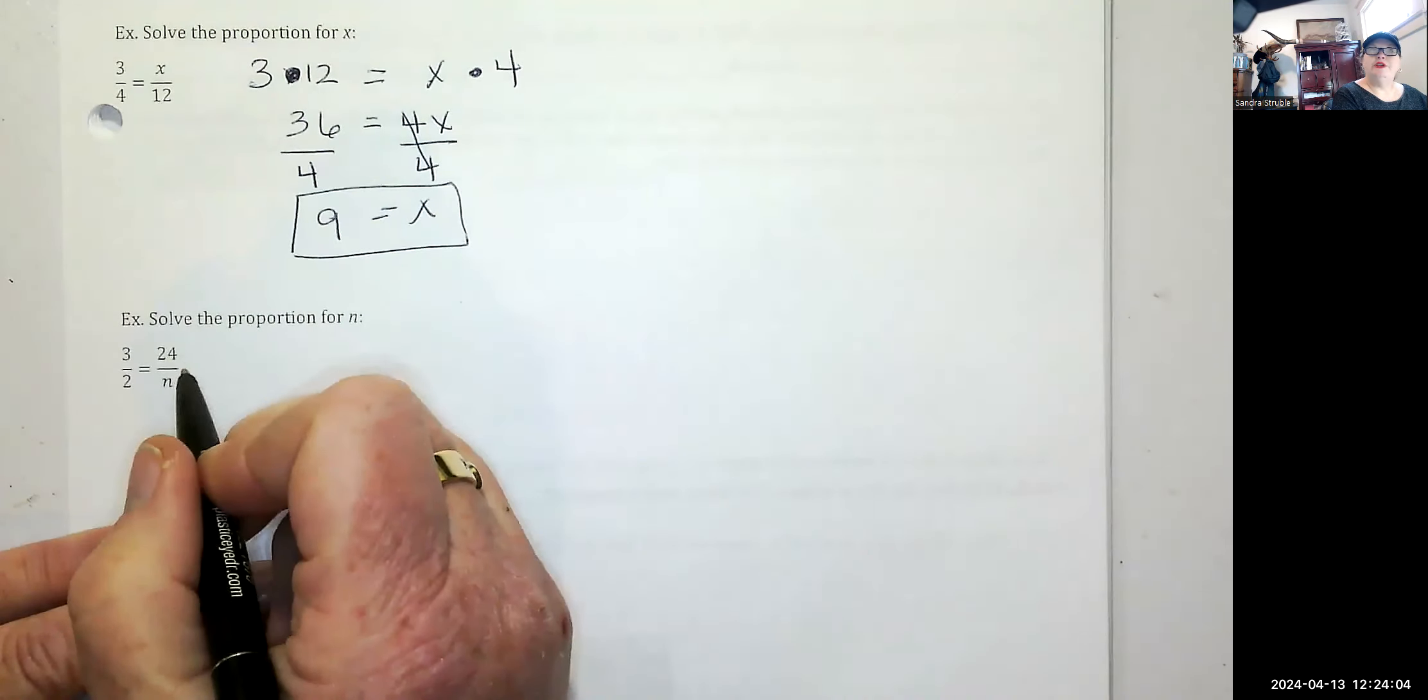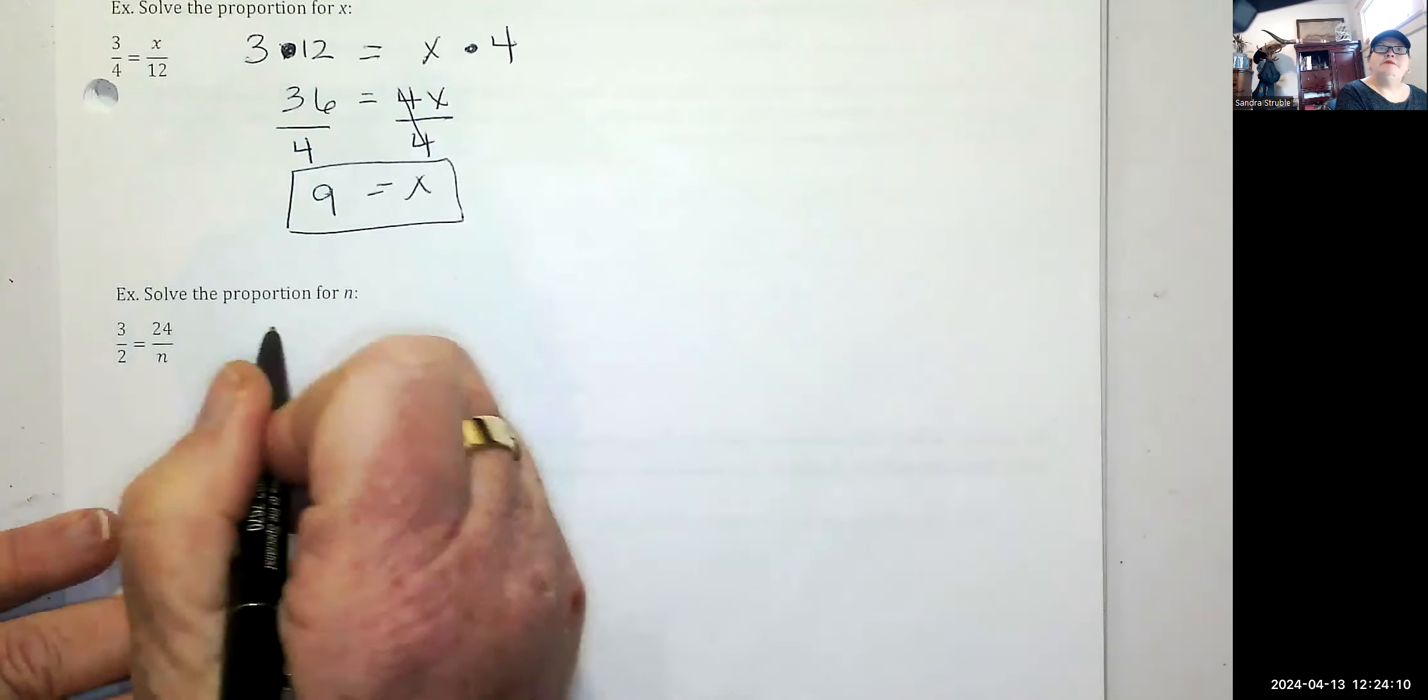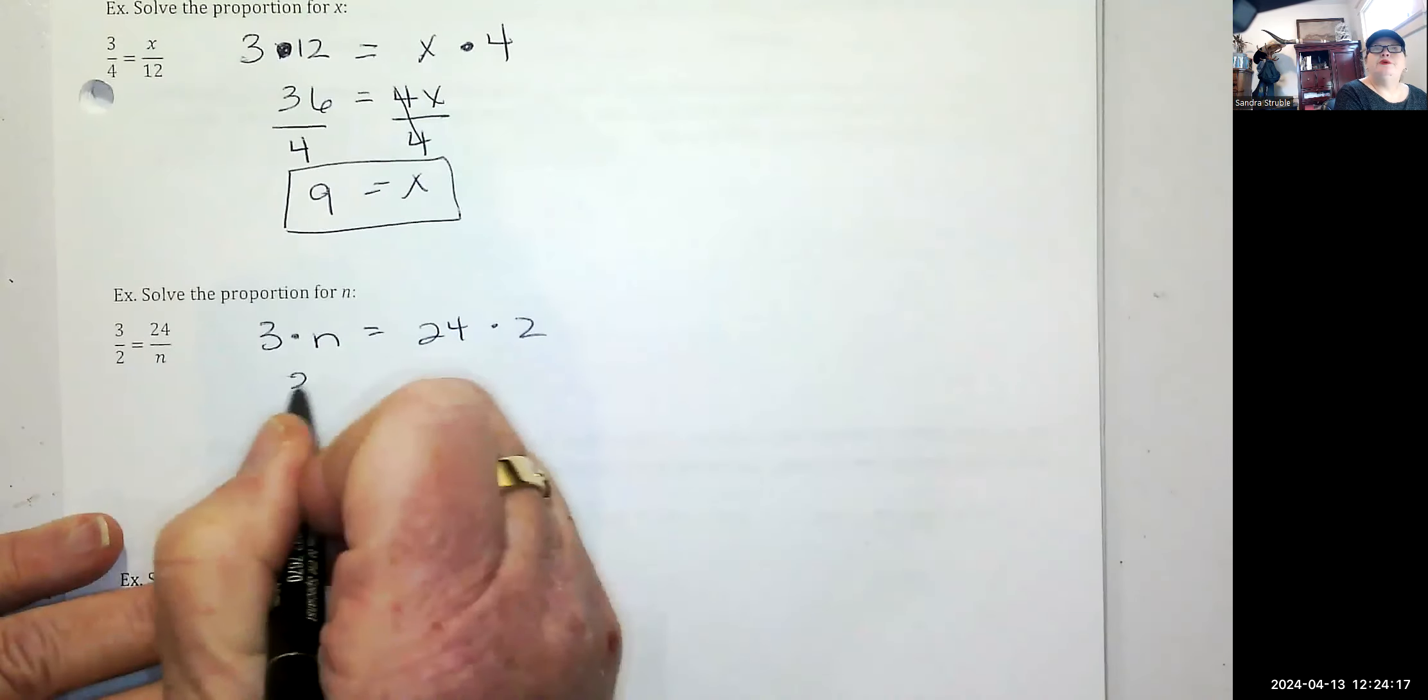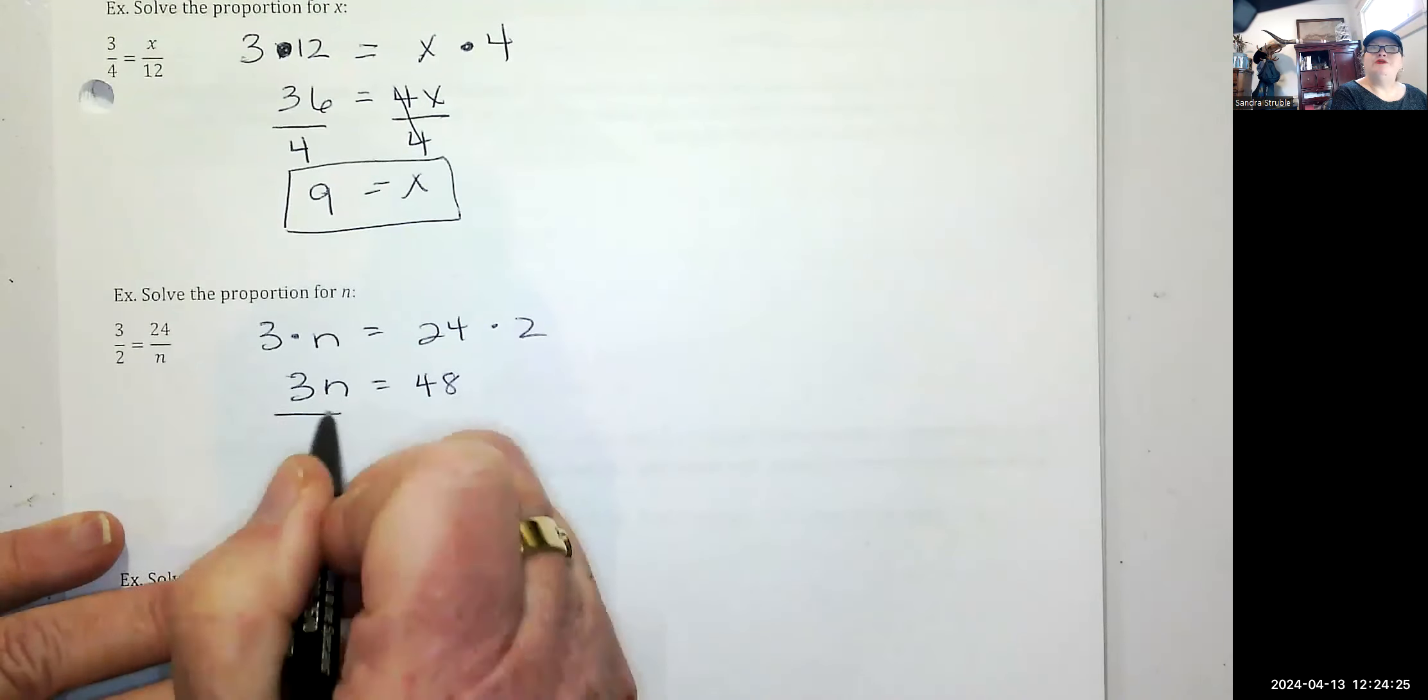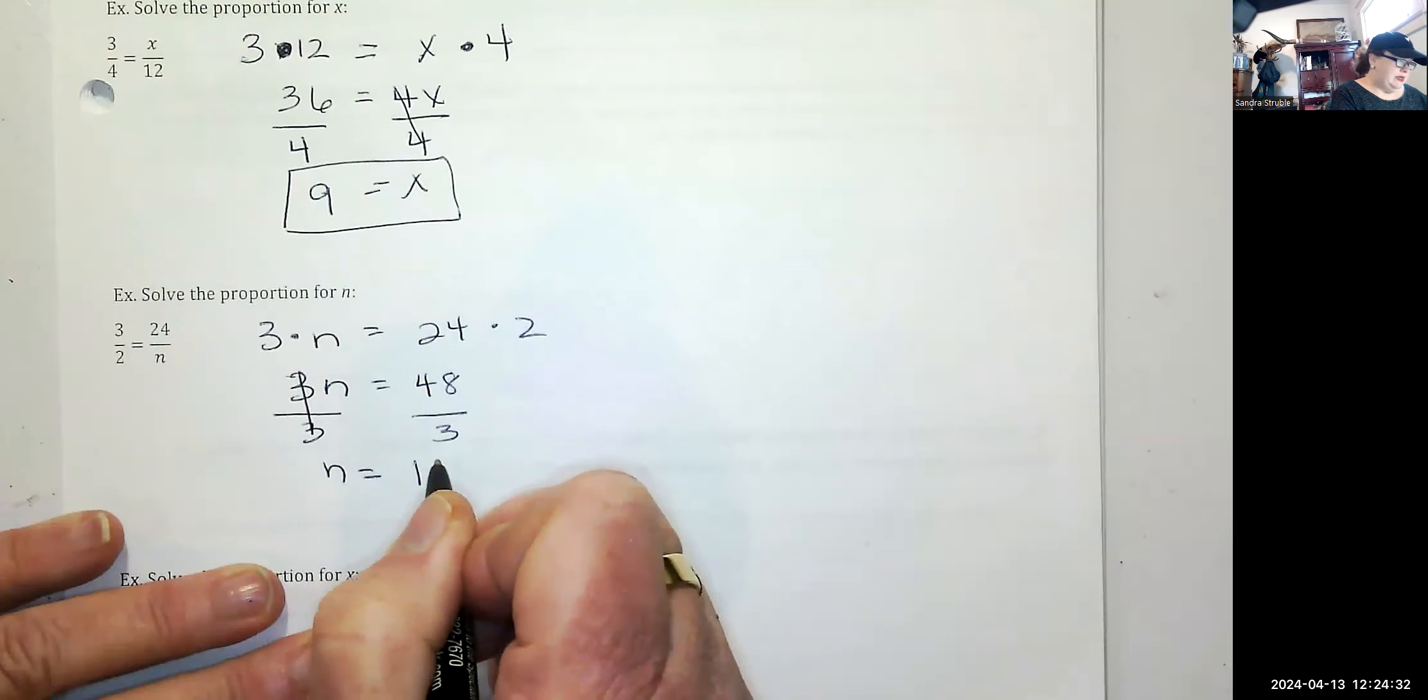So this next one, pause the video, set up the same way, and then come back. Three times N is equal to 24 times two. We're going to solve for N. Three N is equal to 48. Solving for N, three is attached to N by multiplication. The opposite of multiplication is division. So I'm going to divide both sides by three. And N is equal to 16.